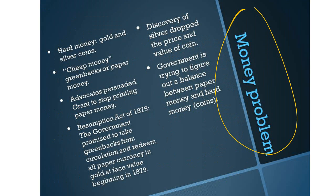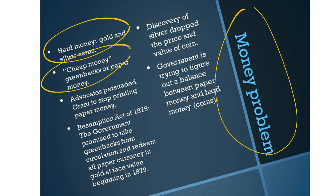There were also major money problems during the Grant administration, especially contributing to the Panic of 1873. There was an issue over hard money — gold and silver coins — versus cheap money, which meant greenbacks or paper money. Advocates persuaded Grant to stop printing paper money, and with the passage of the Resumption Act of 1875, the government promised to take greenbacks from circulation and redeem all paper currency in gold at face value beginning in 1879.